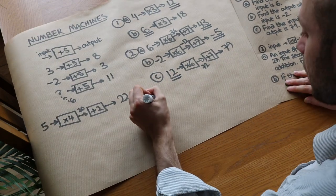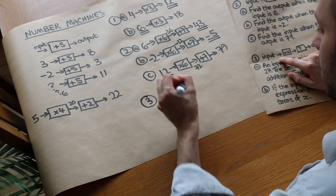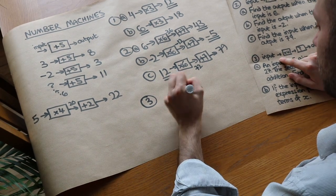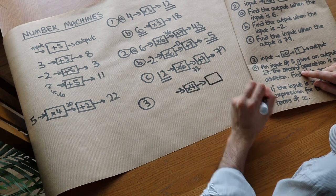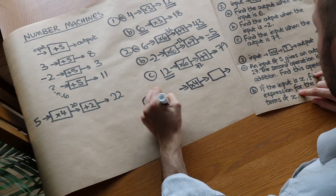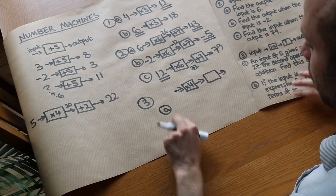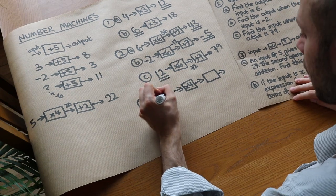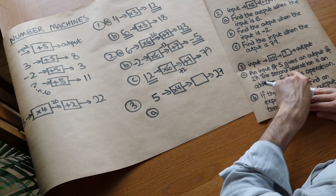And then finally question 3. We've got an input, then it goes through times by 4, and then there's some mystery number machine that we don't know. And that gives us some kind of output. So question A is, the input of 5 gives an output of 27. We've got input of 5, the output is 27. It also tells us the second operation, i.e. the second number machine is an addition.